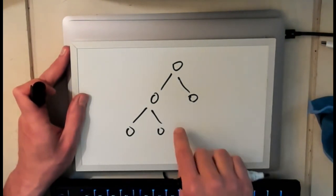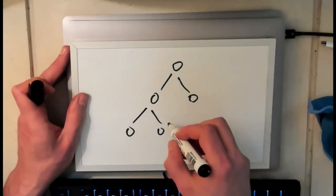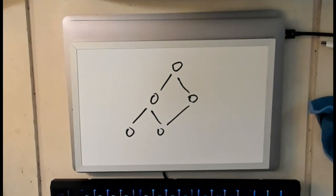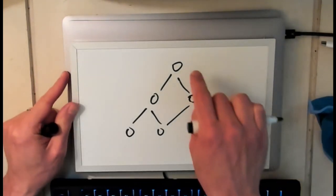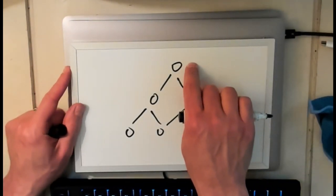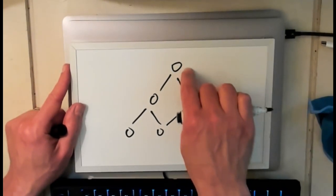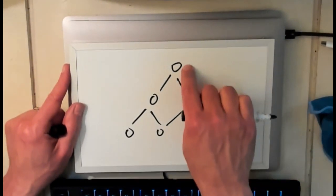Now with an actual graph things get more complicated because I no longer have this distinction between parents and children. Instead what I have are just neighbors. And the problem with neighbors is that I need some way to make sure that I don't get stuck. So let's imagine a naive algorithm that tries to find every node in this graph. So what am I going to do? I'm going to start with this node. I could start with any node. I could start with this node. I could start with this node. They should all work the same. But let's say I start with this node.